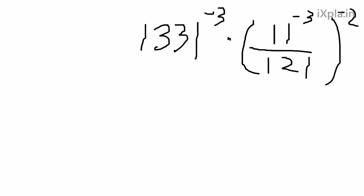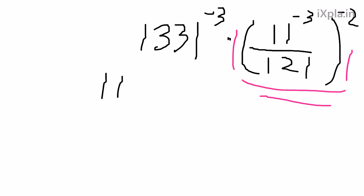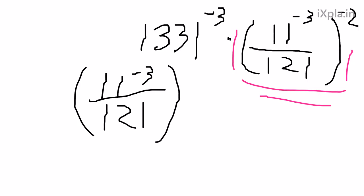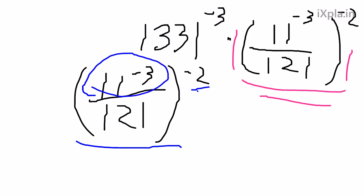We should start by focusing on one section of the problem at a time. So let's do this fraction here: 11 to the negative 3 over 121, all to the power of negative 2. When you have an outer power being applied to the entire item in parentheses, what we do is multiply the power to each component — so this negative 2 will be applied to the numerator and the denominator.